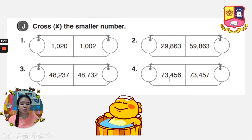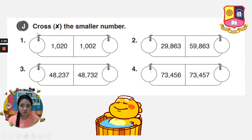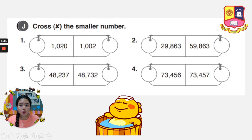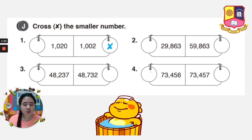We have 1,020 and 1,002. When you compare, you compare first the number of digits. So they are 4 and 4. Then we compare from left to right: 1 and 1, the same; 0 and 0, the same; 2 and 0 — which one is smaller? So that is 1,002. Put an X.